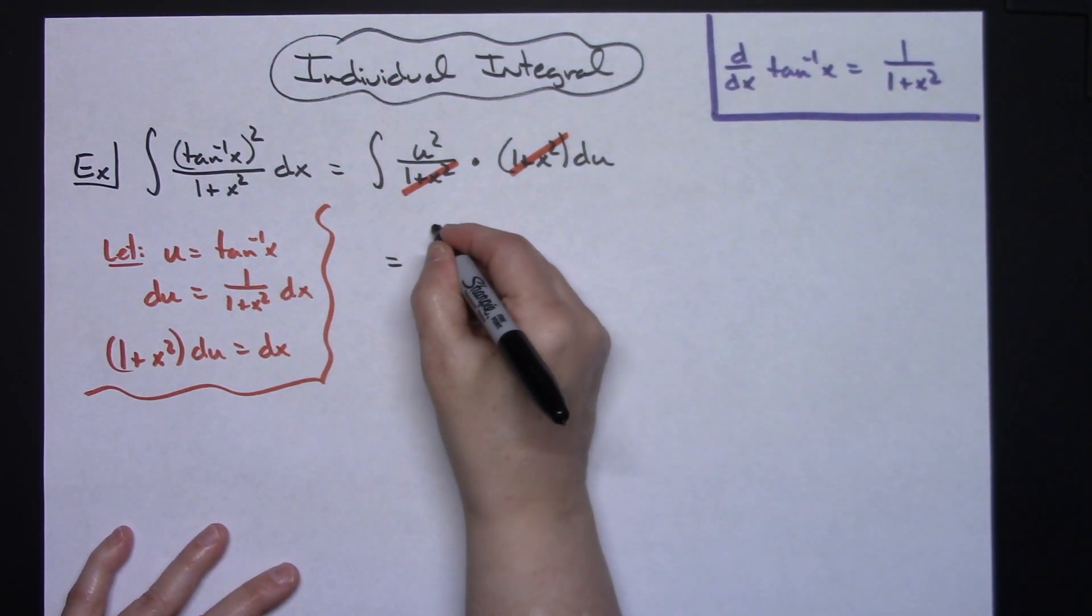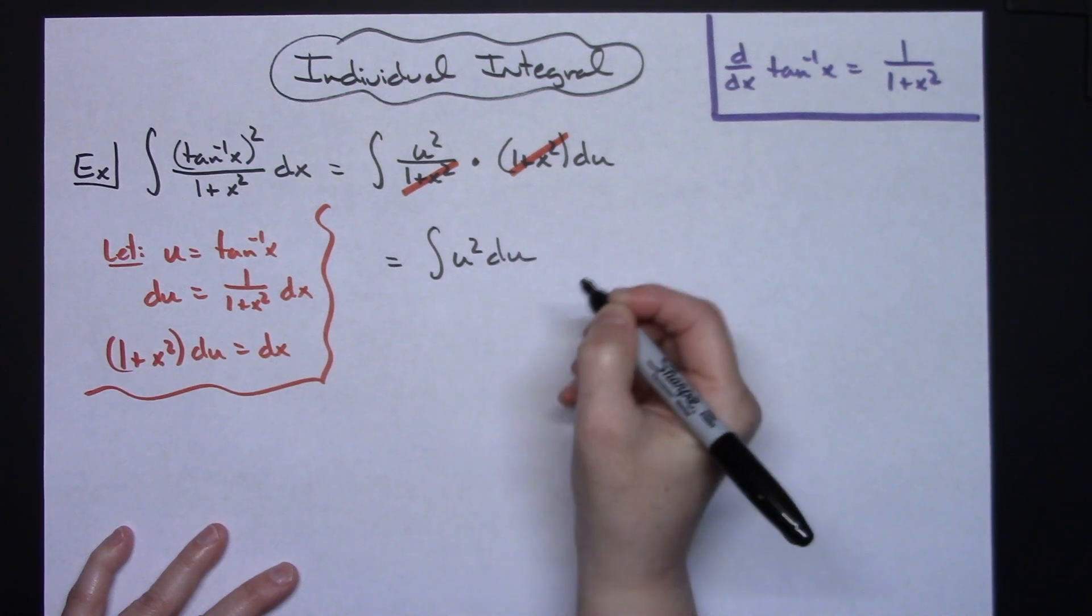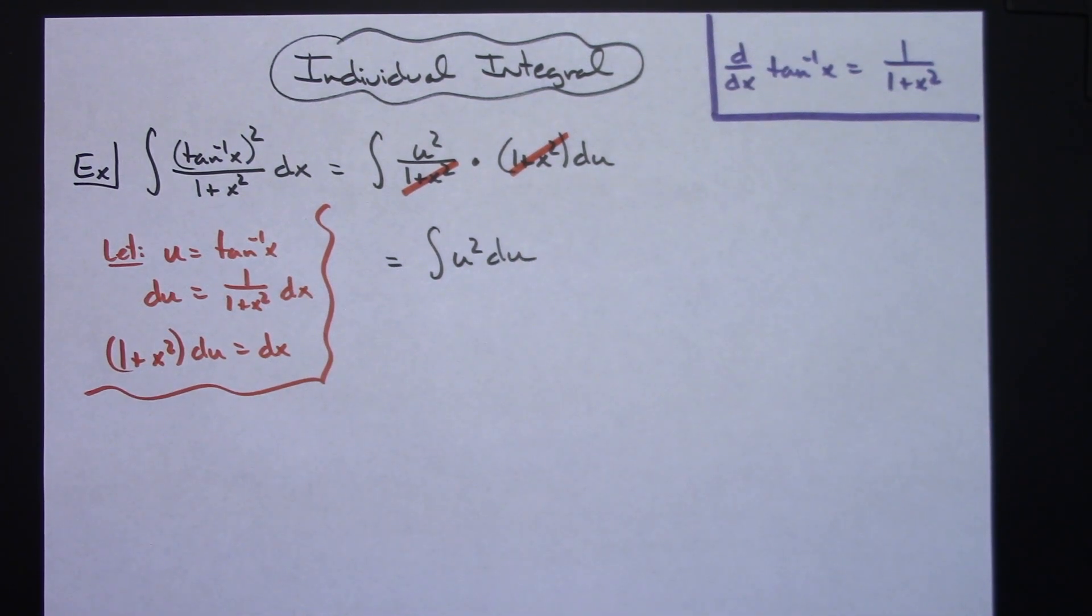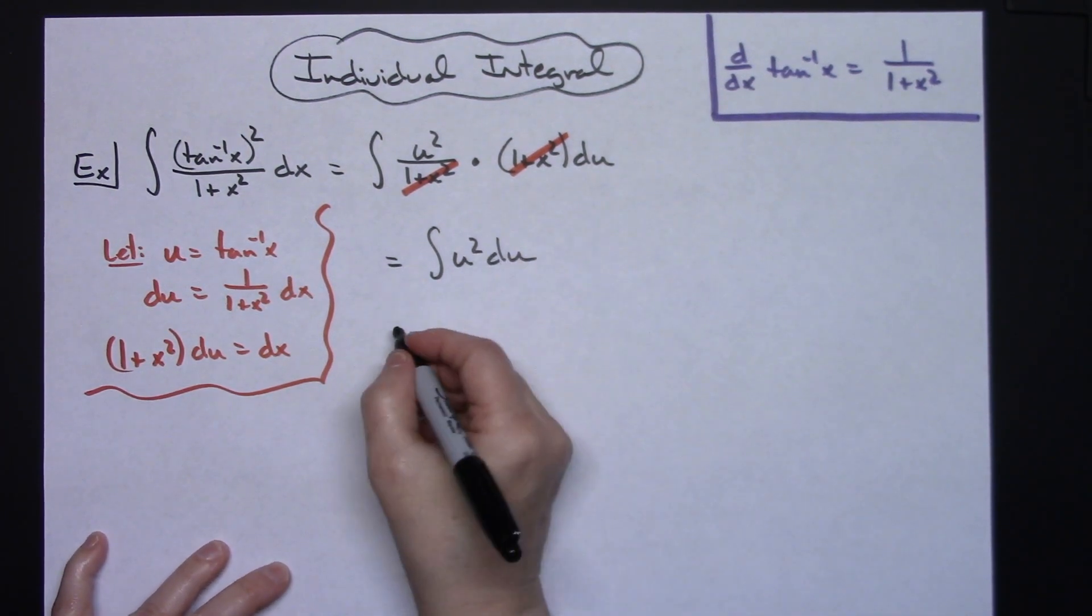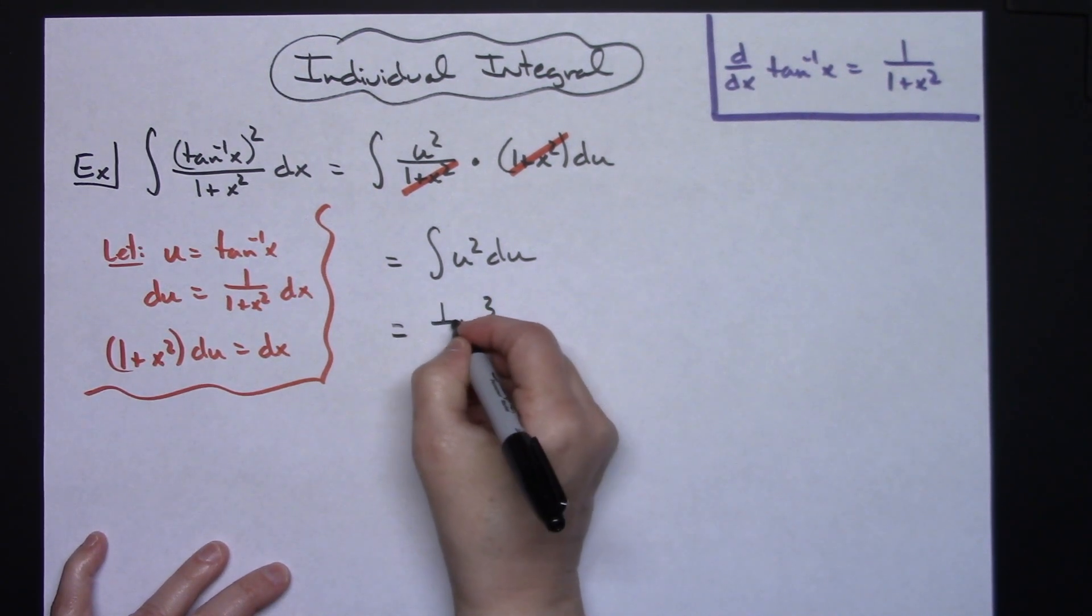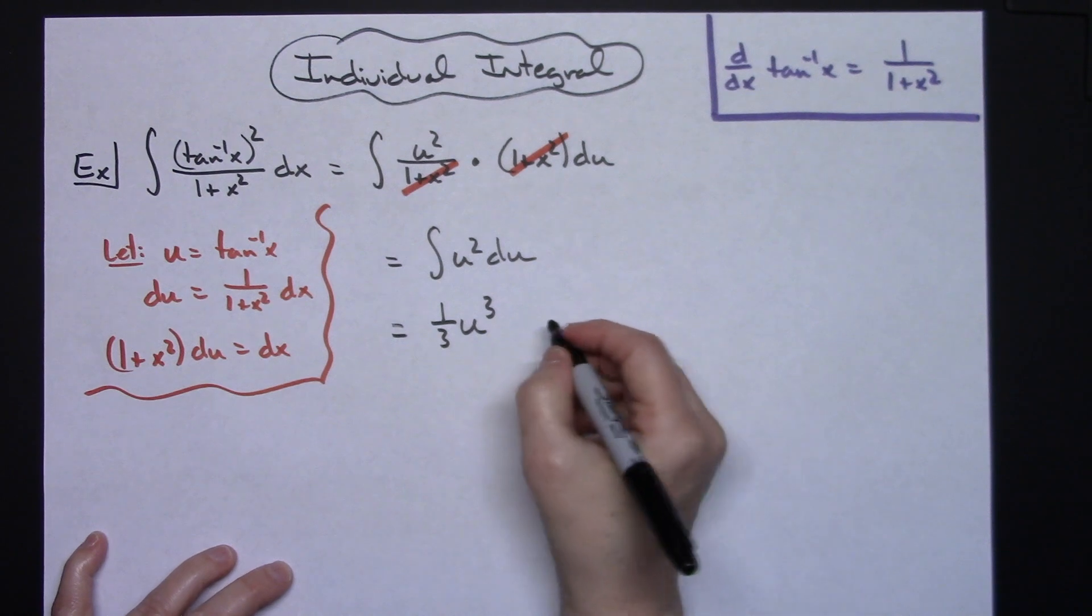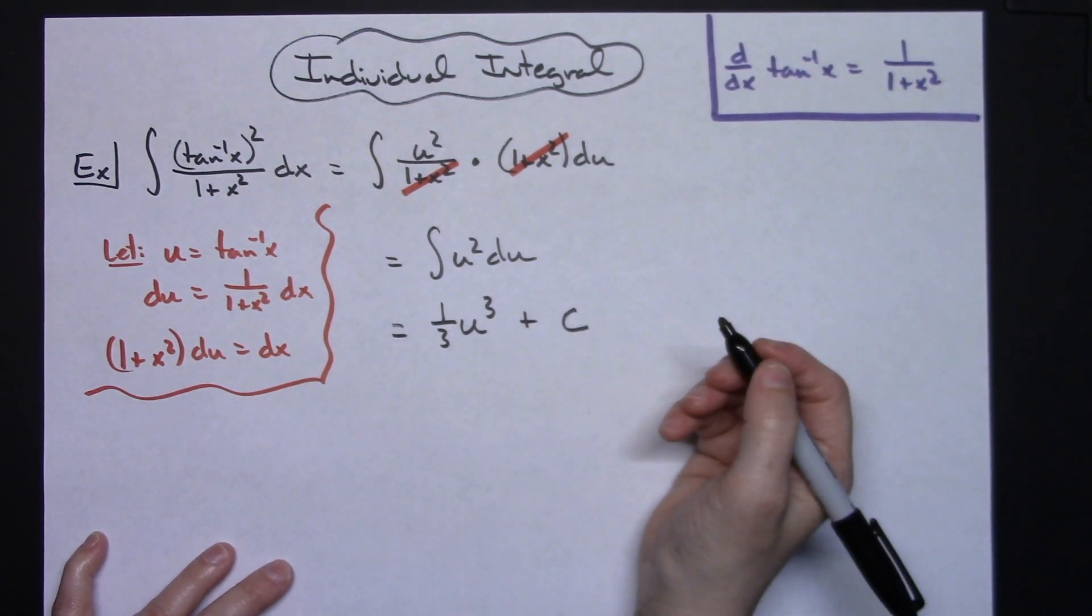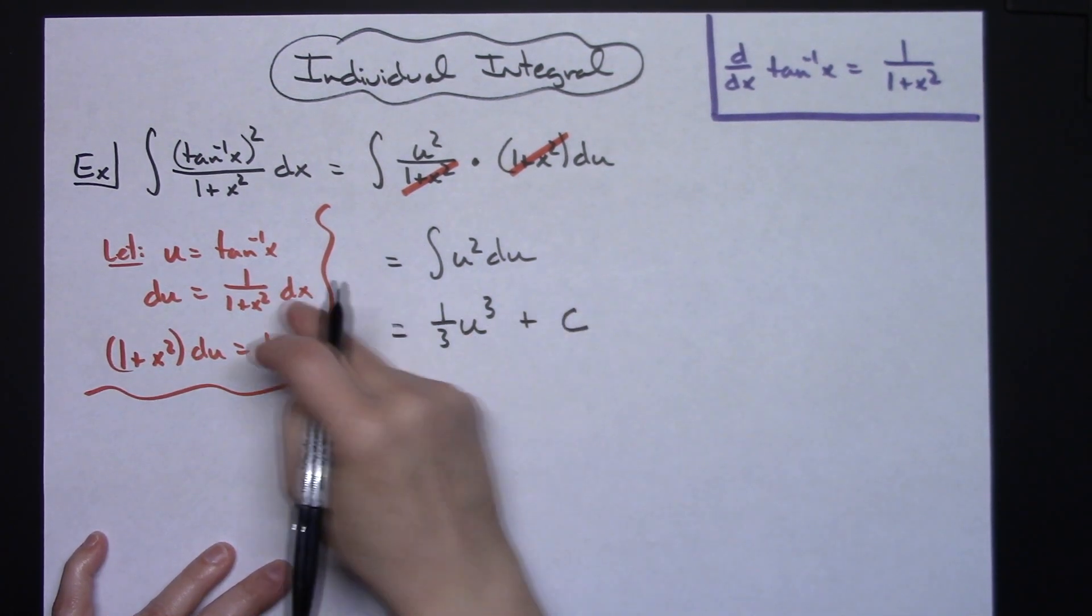Straightforward integral from that point on—you're just going to add 3 to that exponent, so I'll have u to the third, putting in front the reciprocal of one-third, and then plus C because I have integrated. Last step would be to replace u with what it equals.